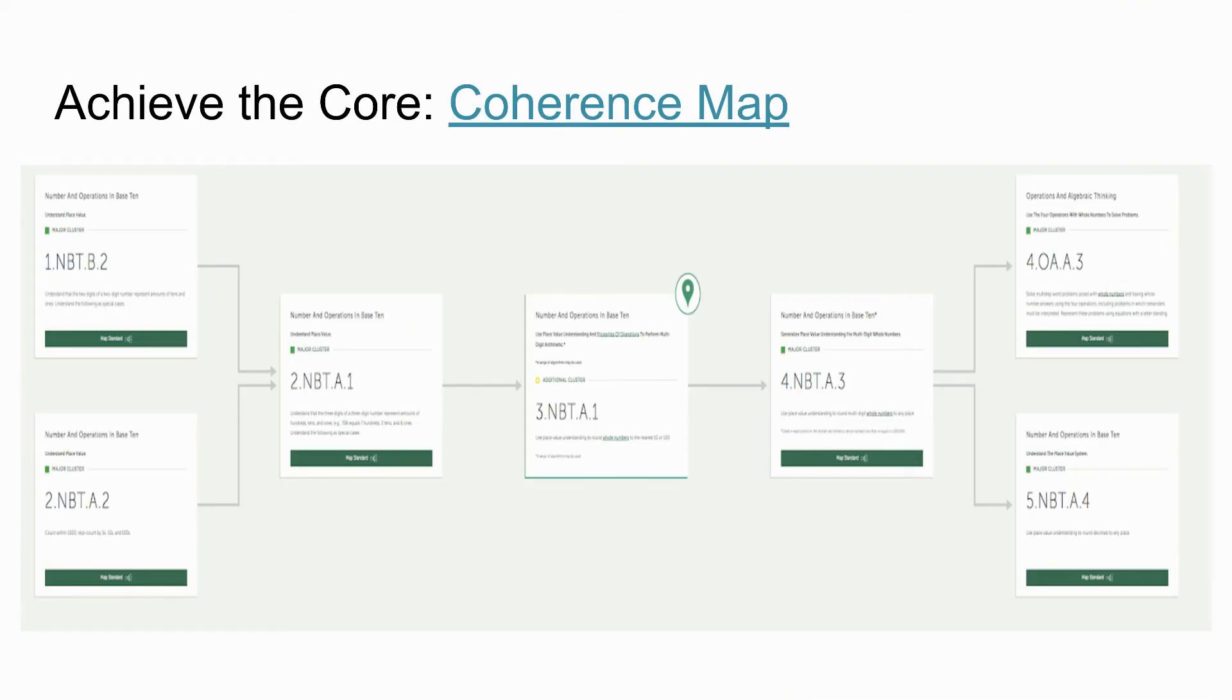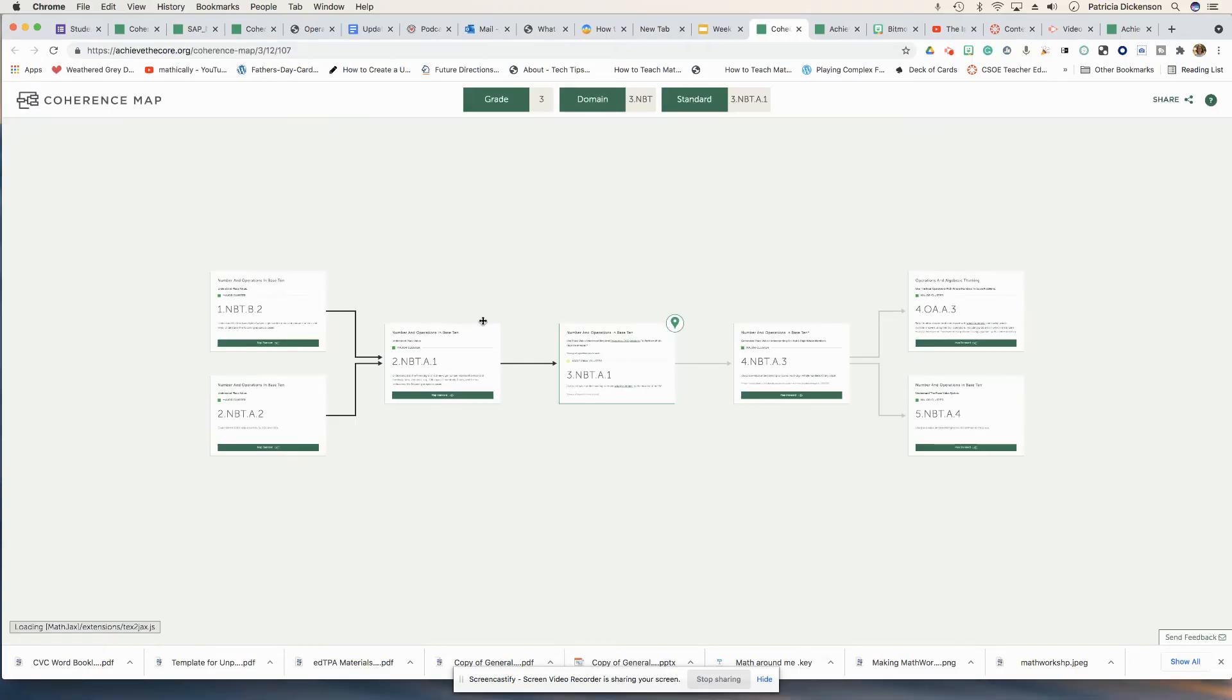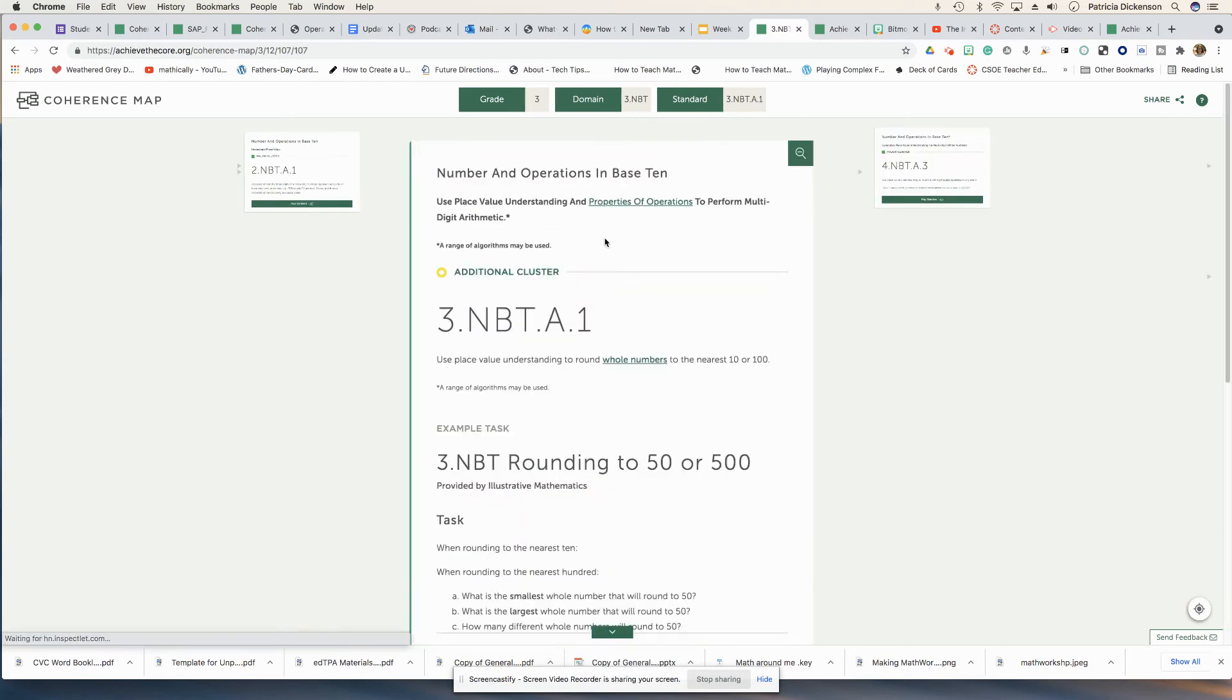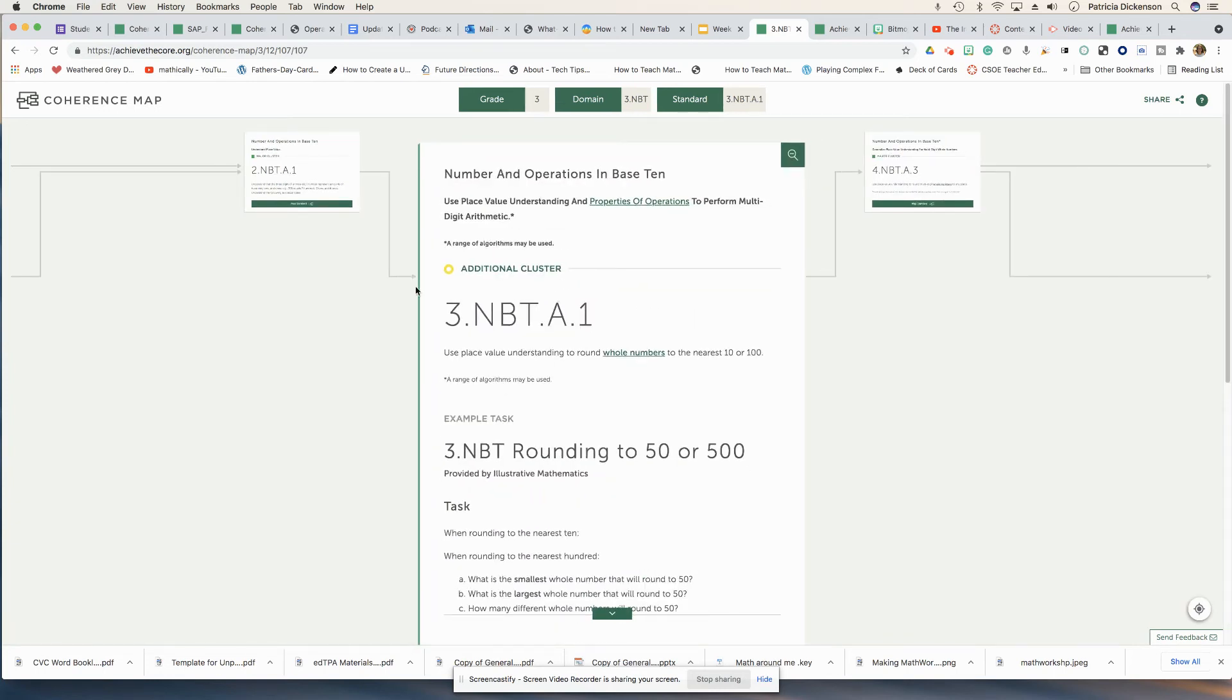So a wonderful tool that I just want to orient you to is called Achieve the Core. It has this backwards mapping, as I call it, of the coherence map. So you're going to click on the coherence map here and you can certainly go to Achieve the Core and you could see the coherence map. I've already picked out if I'm looking at a third grade standard, let's say numbers and operations in base 10, and I want my students to understand place value. And hypothetically, let's say that they're understanding with using place value to round whole numbers to the nearest 10 or 100, which is a third grade standard.